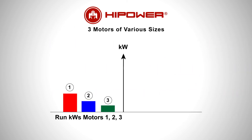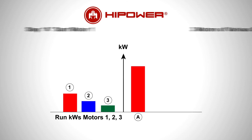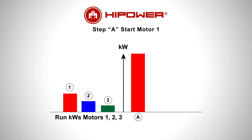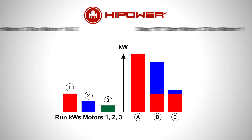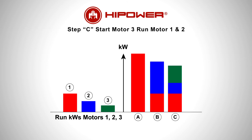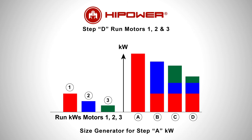When the system load includes multiple electric motors, the size of the generator set can be reduced by starting the motors in stages. When stagger starting, try to start the largest motor first. Also note, some systems have motor starting aids on their electric motors to reduce the starting amps.